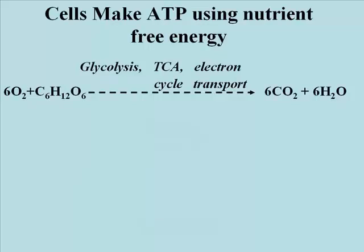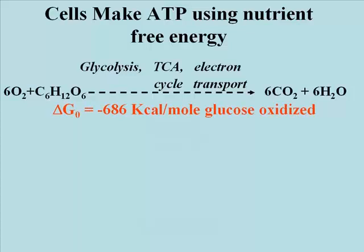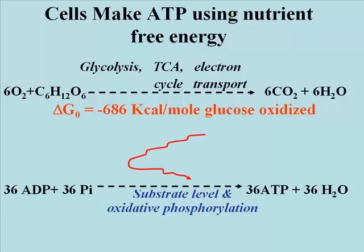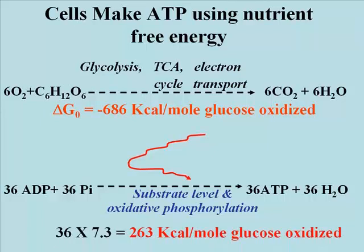Here again is the chemical equation for the combustion of glucose in cells. This occurs in three steps — the principal pathways of glycolysis, the Krebs or TCA cycle, and electron transport — and releases 686 kilocalories per mole of glucose oxidized. The free energy released in these three pathways is captured in ATP, either by substrate level or oxidative phosphorylation. The amount of this 686 kilocalories per mole actually captured as ATP is about 263 kilocalories.